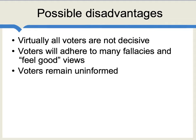What are the possible disadvantages? In the median voter model, virtually all voters are not decisive — their vote doesn't matter. It's that one voter or a very small number of voters right at the center who are deciding who wins. If most voters are not decisive, how much time, effort, intelligence, and information will they put into learning about politics? Very often, not that much. You have a large number of voters who adhere to many economic fallacies, or they hold feel-good views just to feel good about themselves, whether or not those views will be effective in practice. To an often astonishing degree, voters remain uninformed or under-informed in democracy. Those are really some major flaws.